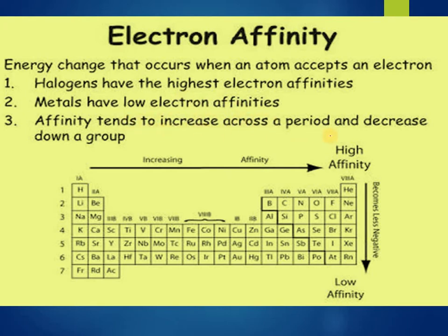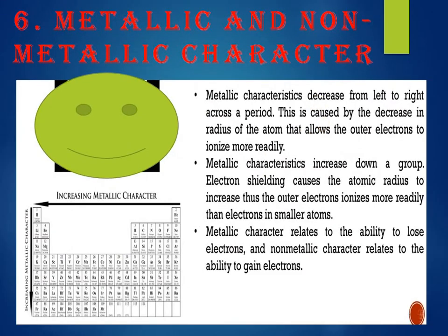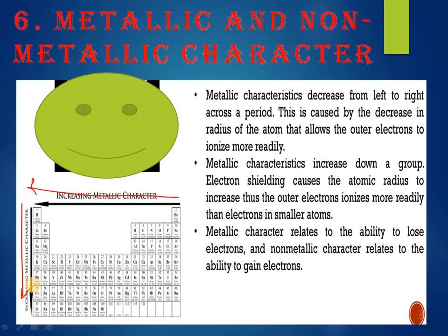Metallic character is linked to electro-positive character — the tendency to lose electrons. Metallic character increases from right to left across a period, and increases going downward in a group as atomic size increases. With increasing atomic size, electro-positive character increases and therefore metallic character increases. Non-metallic character shows the opposite trend.